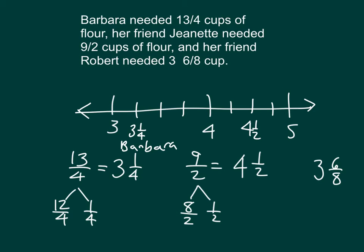For 3 and 6 eighths, 3 and 6 eighths actually is equal to 3 and 3 fourths. I can break it apart into 8ths if you want to see that. And then we'd have 3, 1 eighth, 2 eighths, 3 eighths, 4 eighths, 5 eighths, 6 eighths. That is 3 and 6 eighths, which is Robert. So that's Robert. And we'll write that name in there. And we'll also write in the name for 4 and 1 half, who is Jeanette.